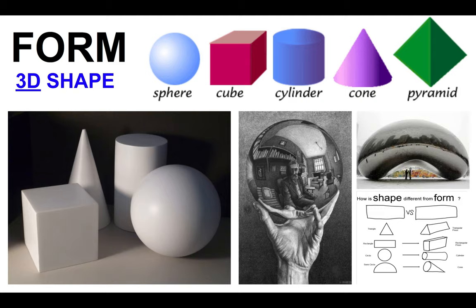Then we have form. Form is a 3D shape. We talked about how shapes are flat and have height and width. Well, form also has height and width, but it's not flat anymore because we have depth. We start to see how things go back in space, and in drawing and painting, we're essentially creating an illusion of space on a flat surface. But we can create that space by drawing forms.